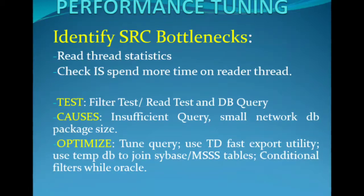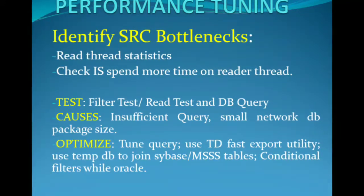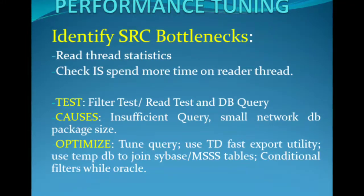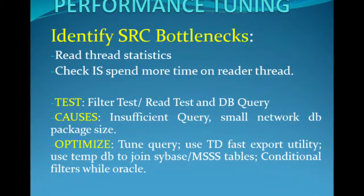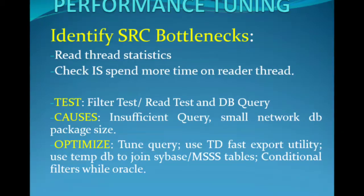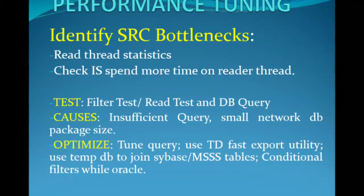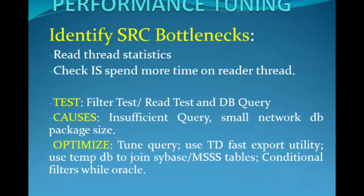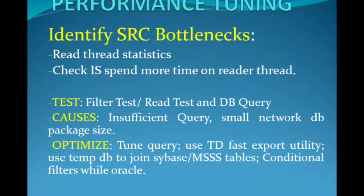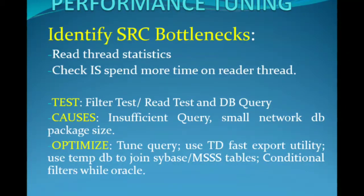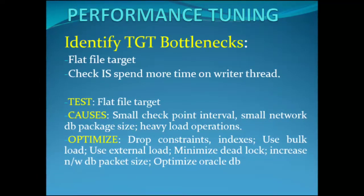To optimize the source, tune the query — add hints or make other adjustments to address insufficient queries. Increase the database network packet size. Use the Teradata FastExport utility to improve source performance. If using Sybase or MS SQL Server, use a temp database for joins instead of joining in SQL. Connecting to Oracle DB sources using conditional filters can also optimize source performance.